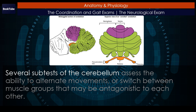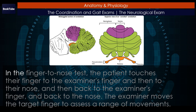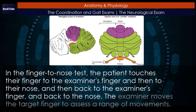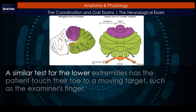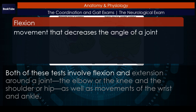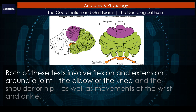Several subtests of the cerebellum assess the ability to alternate movements or switch between muscle groups that may be antagonistic to each other. In the finger to nose test, the patient touches their finger to the examiner's finger and then to their nose, and then back to the examiner's finger and back to the nose. The examiner moves the target finger to assess a range of movements. A similar test for the lower extremities has the patient touch their toe to a moving target, such as the examiner's finger. Both of these tests involve flexion and extension around a joint, the elbow or the knee and the shoulder or hip, as well as movements of the wrist and ankle.